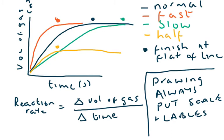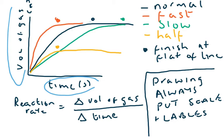In the exam, you will be asked to draw a graph. Graphs are always either going up for the release of the volume of gas being given off against time, or the mass loss, which would be the reverse of that with the graph coming down. Always put on the labels and the scales — they are worth marks.